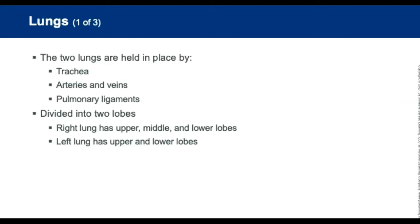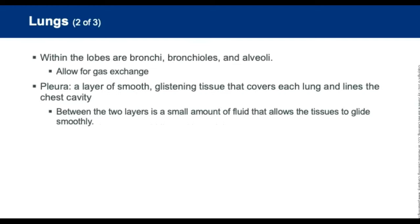Each lung is divided into lobes. The right lung has three lobes — upper, middle, and lower. The left has two — upper and lower. Within the lobes are bronchi and bronchioles, which end at the alveoli. The alveoli are where gas exchange happens — oxygen and carbon dioxide are exchanged there.